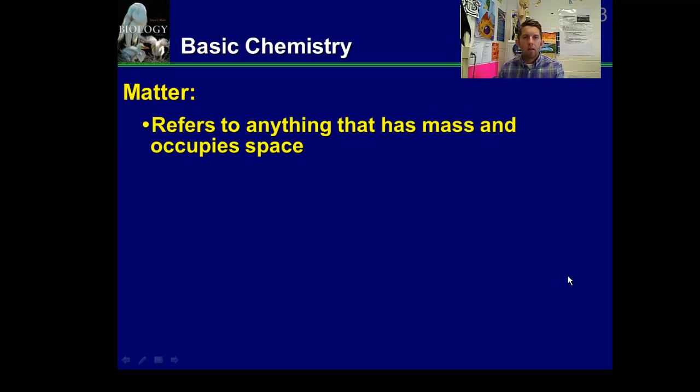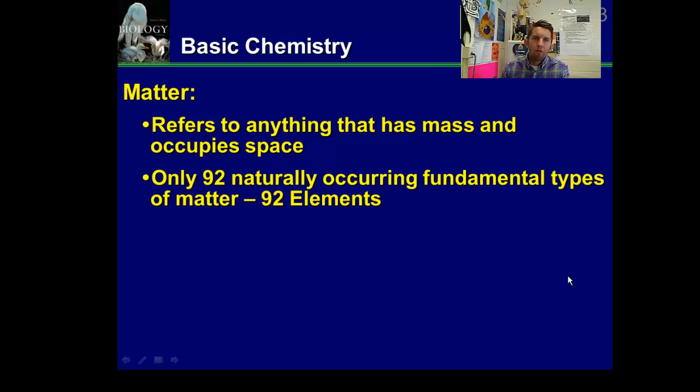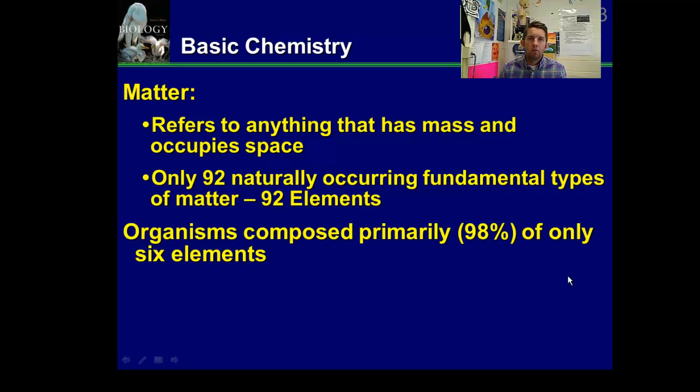Matter refers to anything that has mass and occupies space. You're all familiar with the periodic table of elements. There's more than 92 elements on the table, but only 92 of them are naturally occurring. There are more added every year that are synthetic, which means that are man-made, but there's 92 that primarily will form naturally.